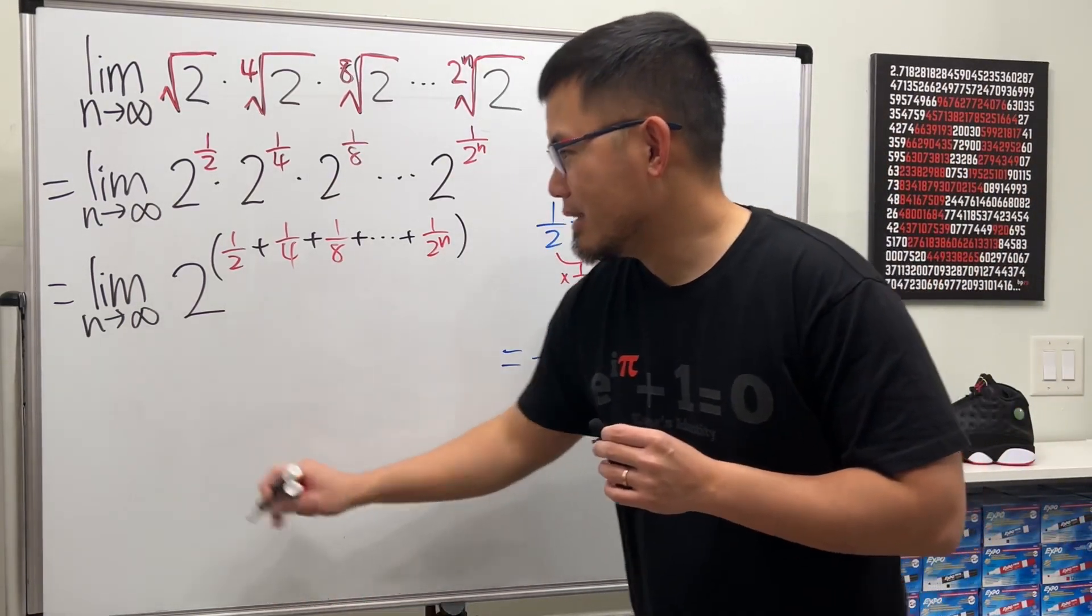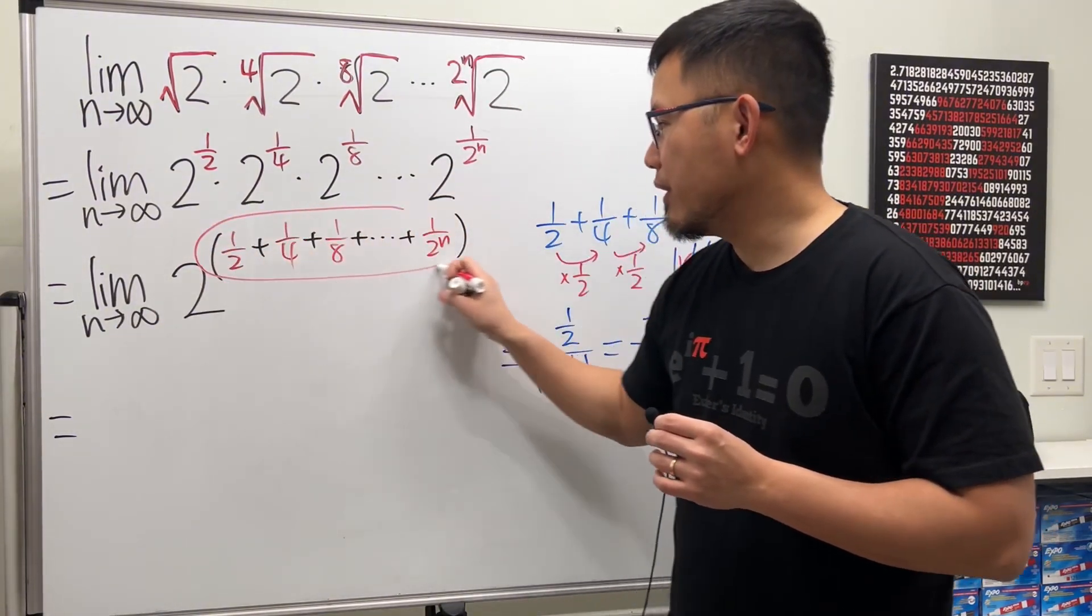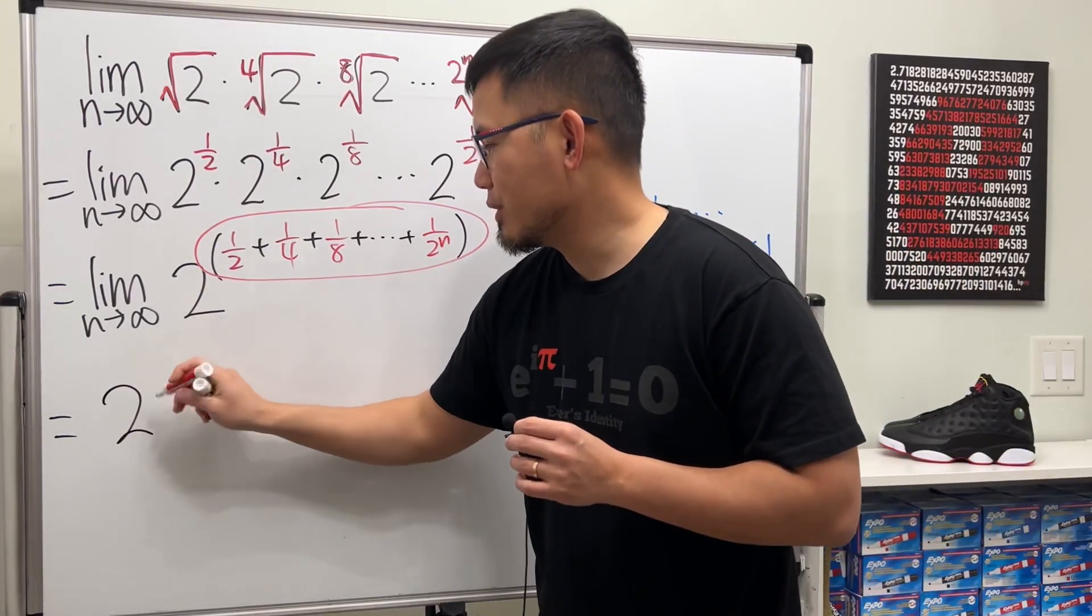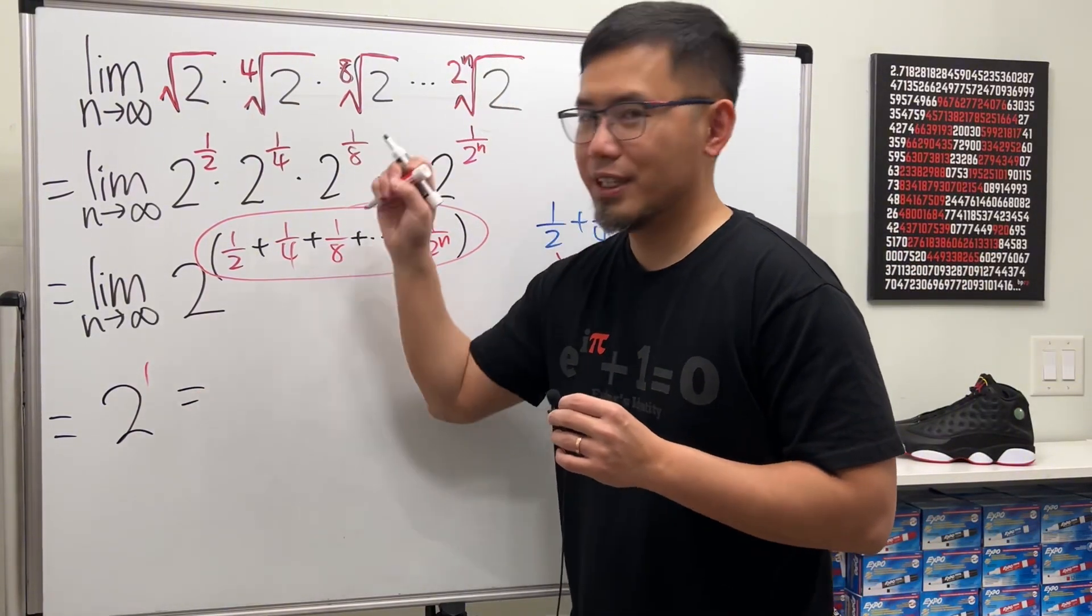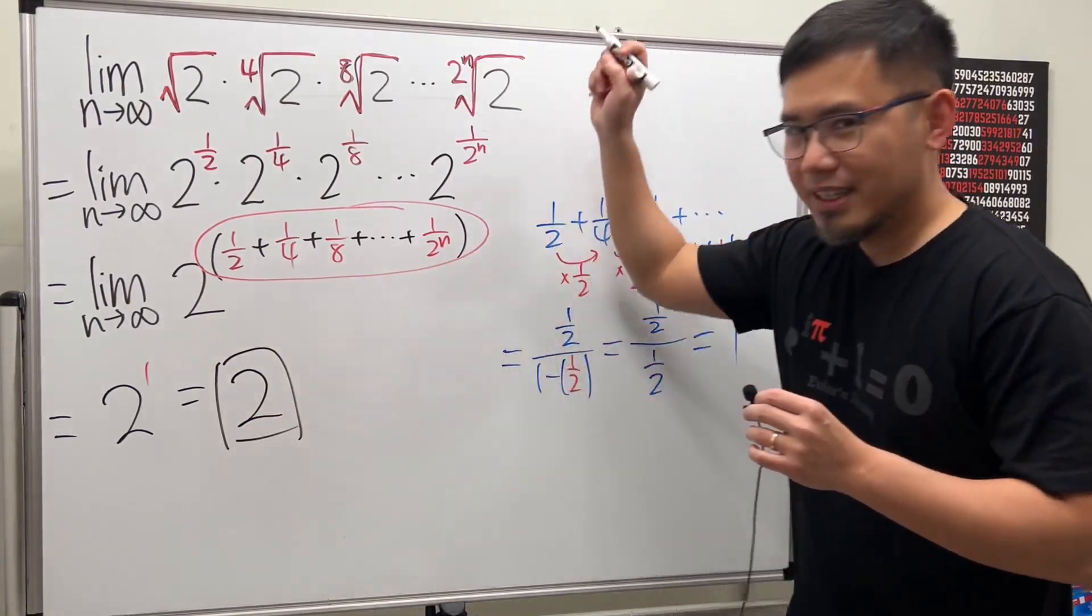So all in all, this right here, as n goes to infinity, this whole thing will converge to 1. So we get 2 to the first power. And of course, the answer for this is 2. And we're done.